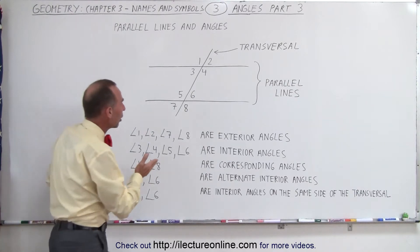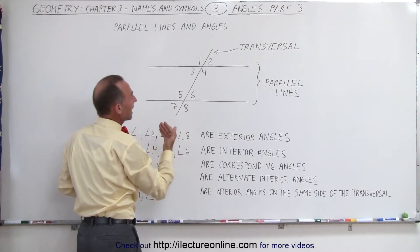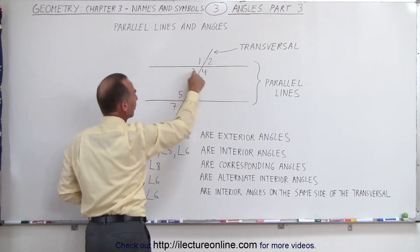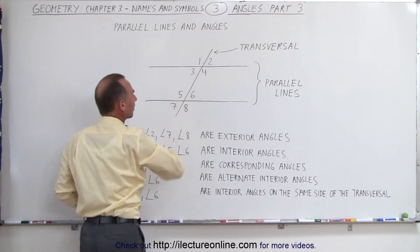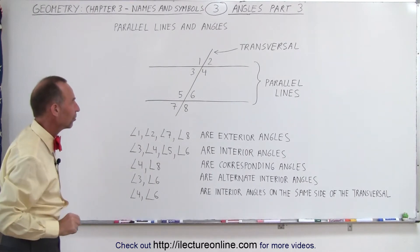Now if we draw a single line across these two parallel lines right here, we then create eight angles: one, two, three, four, five, six, and seven, eight. Now let's talk about these angles because they have specific names.